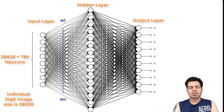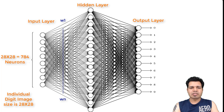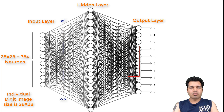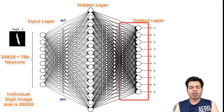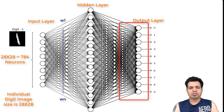During the training process, we provide our neural network model with labeled data. For example, I gave an example of classifying handwritten digits in the previous video, so let's use that for illustration. In the output layer, we have 10 nodes, each depicting a single digit category from 0 to 9. We supply the image data along with associated labels to our neural network model — for simplicity, let's say we provide the image of the handwritten digit number one.